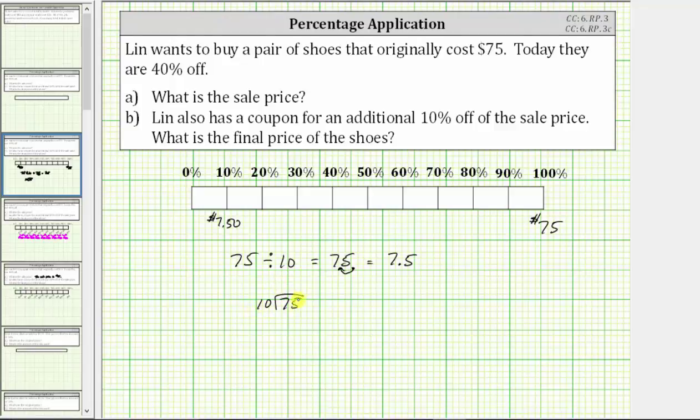We first determine how many 10s in 75, which is 7. 7 times 10 is 70. Subtract. The difference is 5. Add a decimal to the dividend. Add a 0. Move the decimal up to the quotient. Bring the 0 down.